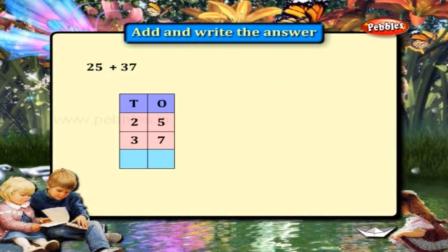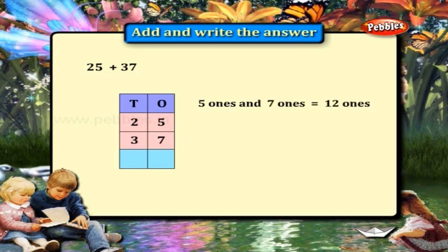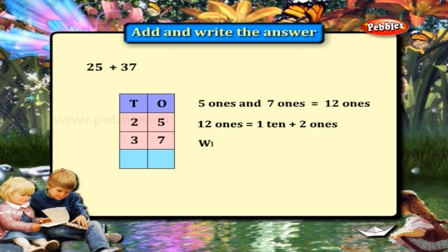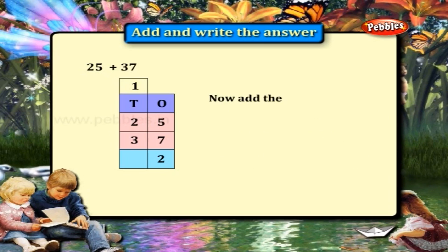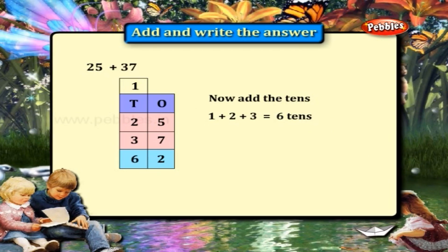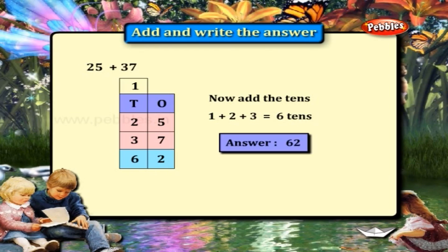25 plus 37. Add the numbers in the ones column: 5 plus 7 is equal to 12. 12 ones is equal to 1 ten plus 2 ones. So write 2 in the ones place and carry 1 to the 10's place. Now add the 10's: 1 plus 2 plus 3 is equal to 6. The answer is 62.